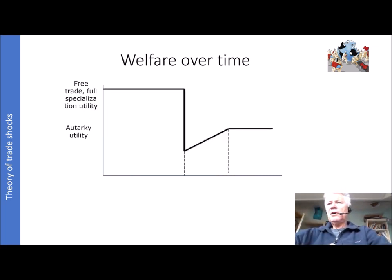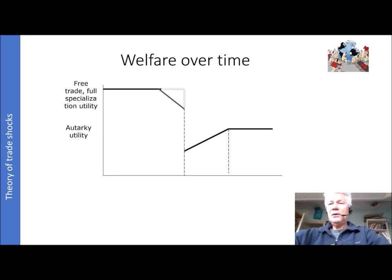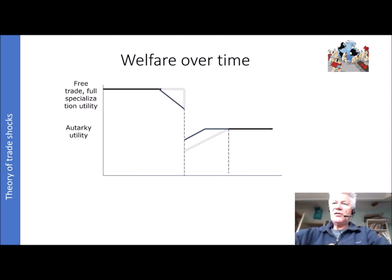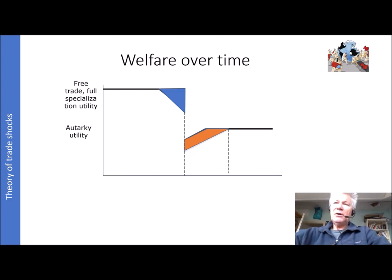Looking again at welfare over time: we see a steep fall and then a slow recovery. If we start to de-specialize before the disruption occurs — trade less before the accident happens — we can reduce the fall from two sides. There is a smaller fall because you already anticipated a trade disruption and started to adjust earlier, moving your economy towards the autarchy point. The key question is which area is larger: if the blue area exceeds the orange area, then the cost of precautionary measures is bigger than what you gain. But if it's the other way around, it pays to reduce trade somewhat because you know it will be disrupted in the future.